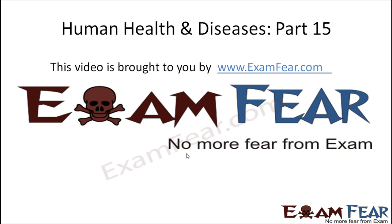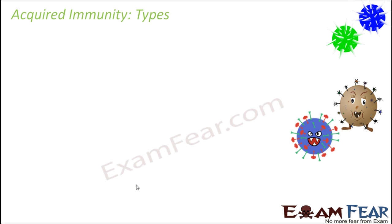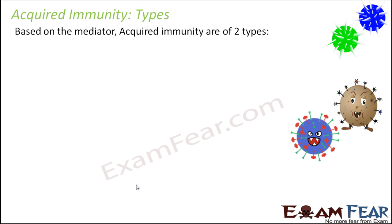Hello friends. This video on human health and diseases part 15 is brought to you by examfear.com. Now let us again talk about the different types of acquired immunity. Before this we spoke about the two types of immunity, that is innate immunity and acquired immunity. Now let us see what are the types of acquired immunity.